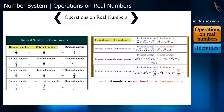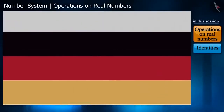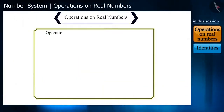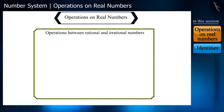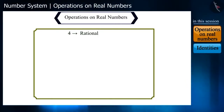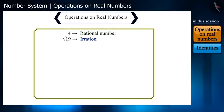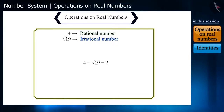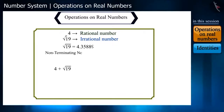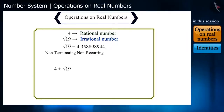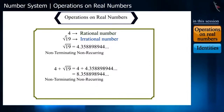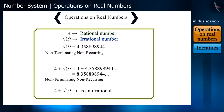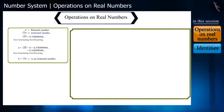Now let's learn operations between rational and irrational numbers. For example, 4 is a rational number and √19 is an irrational number. On adding them, since the decimal form of √19 is non-terminating and non-recurring, the decimal form of 4 + √19 will also be non-terminating and non-recurring — meaning it is an irrational number.